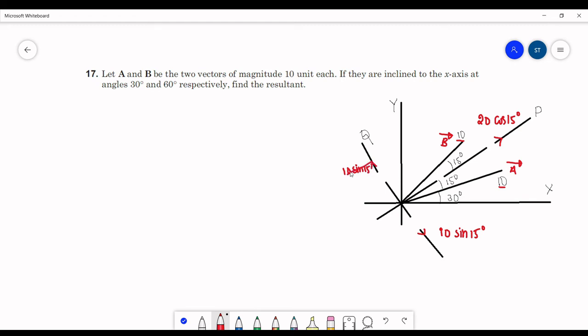So this will get cancelled out. The net resultant will be along p and that will be 20 cos 15. If you see the angle with the x-axis, this will be 30 plus 15, which is 45 degrees.